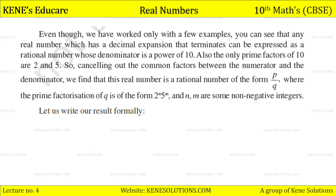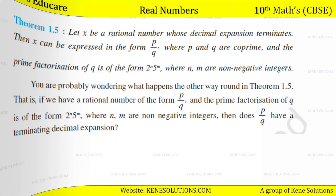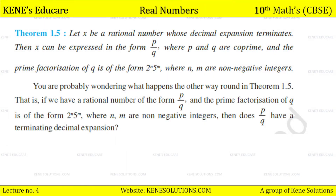Let us write our result formally. Theorem 1.5: Let x be a rational number whose decimal expansion terminates. Then x can be expressed in the form p by q where p and q are co-prime and the prime factorization of q is of the form 2 to the power n × 5 to the power m, where n and m are non-negative integers.